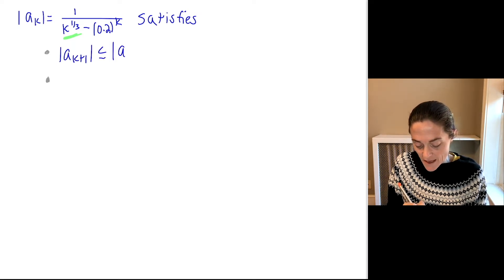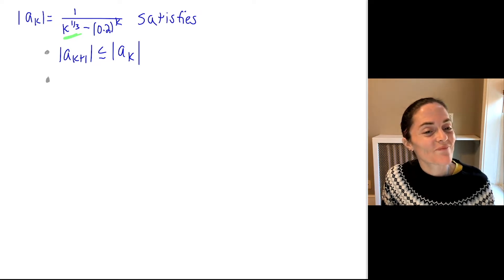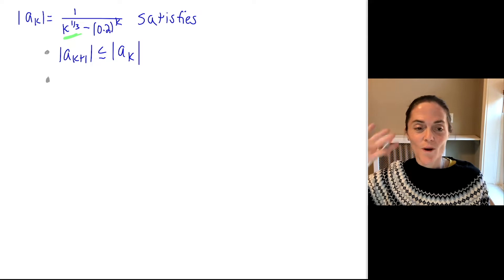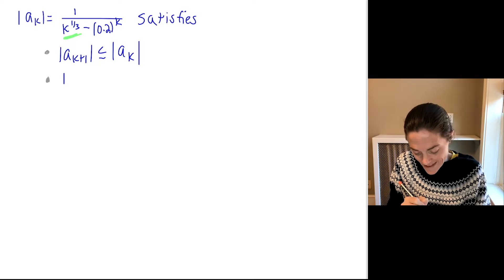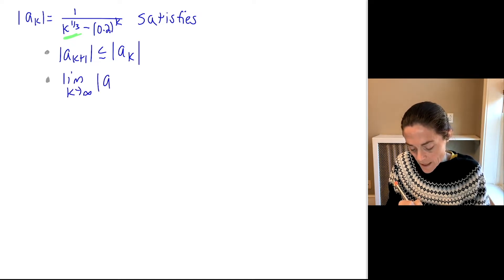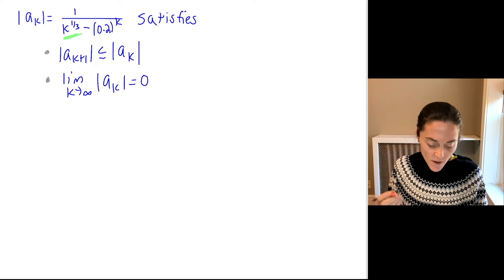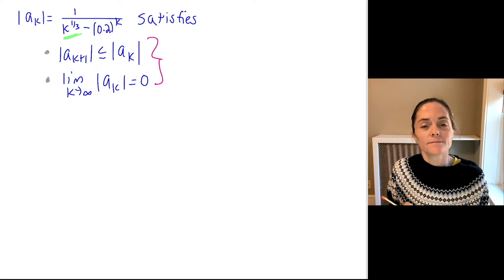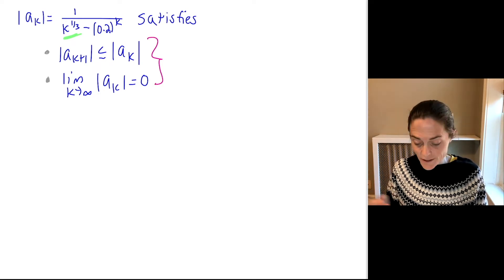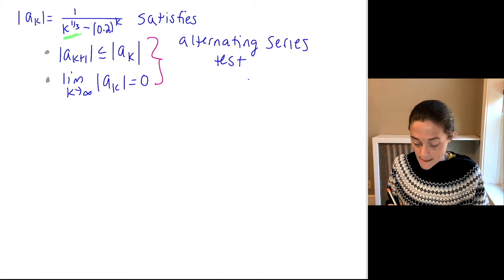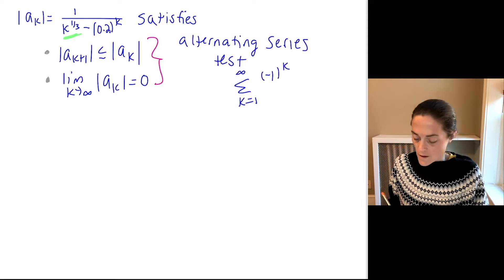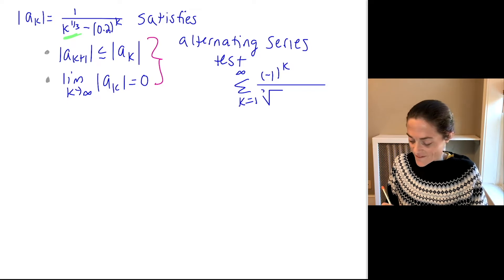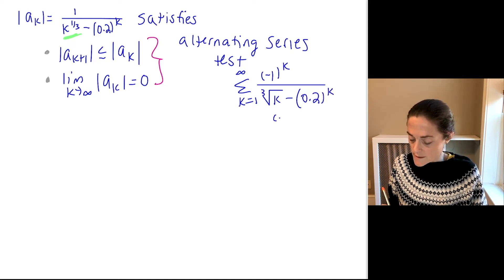This is the case — the denominator is growing, so 1 over that is decreasing. We also need the limit as k goes to infinity of the absolute value of a_k to be zero, and this also holds. So these two together, plus the fact that the series is alternating, mean the alternating series test applies. This says the series — minus 1 to the k over the cube root of k minus 0.2 to the k — converges.